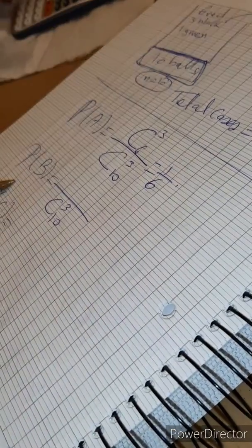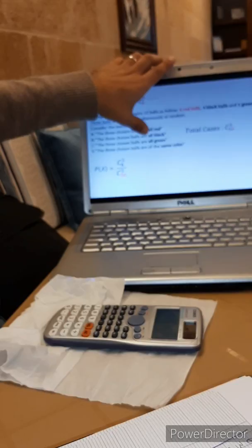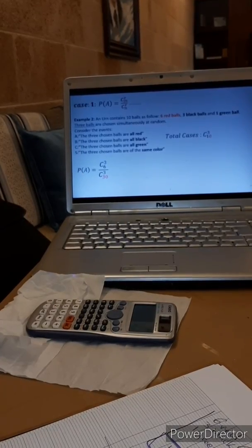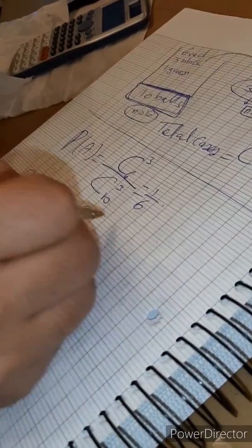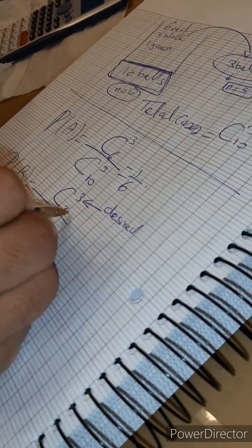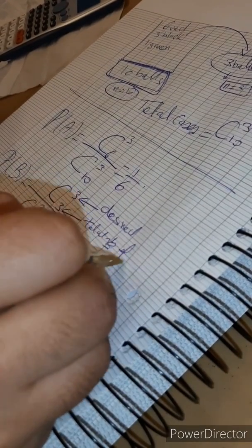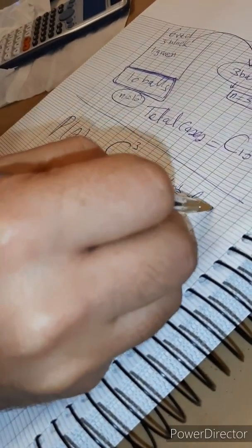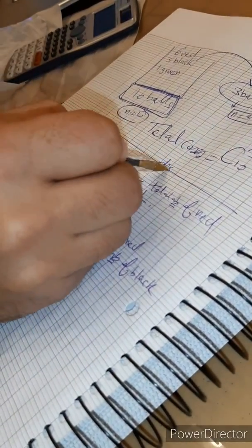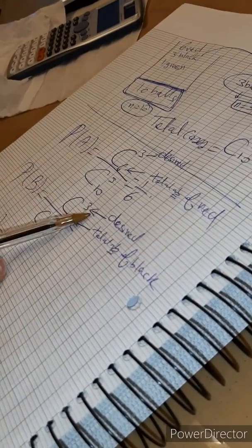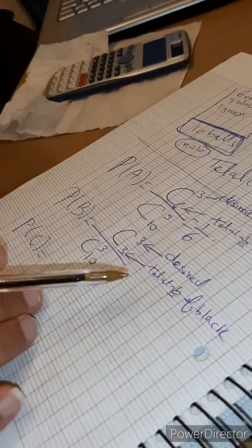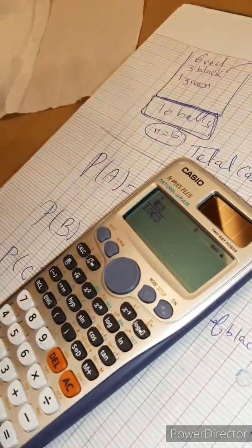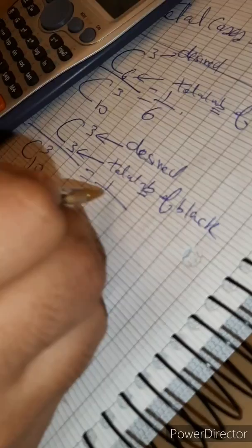For P(B) — all three chosen are black — I have 3 black balls and I need all 3 to be black, so numerator is C(3) out of 3. This gives P(B) = C(3) out of 3 over C(3) out of 10. On the calculator, just change 6 to 3, and the answer is 1 over 120.